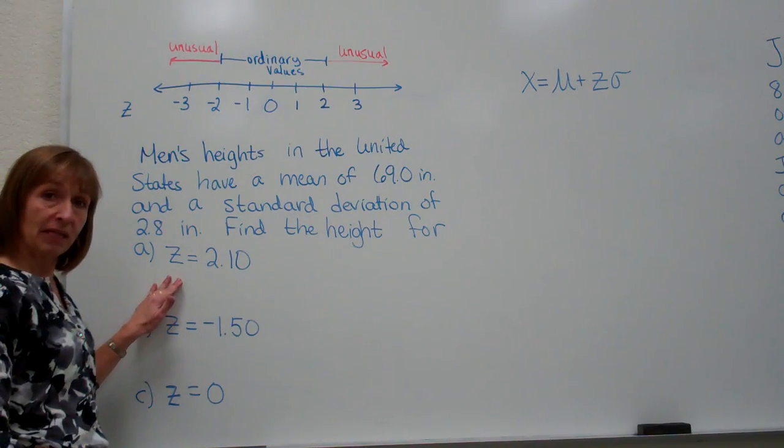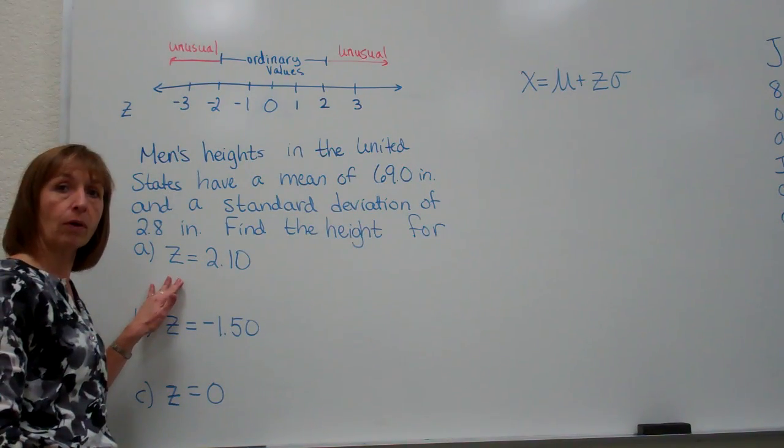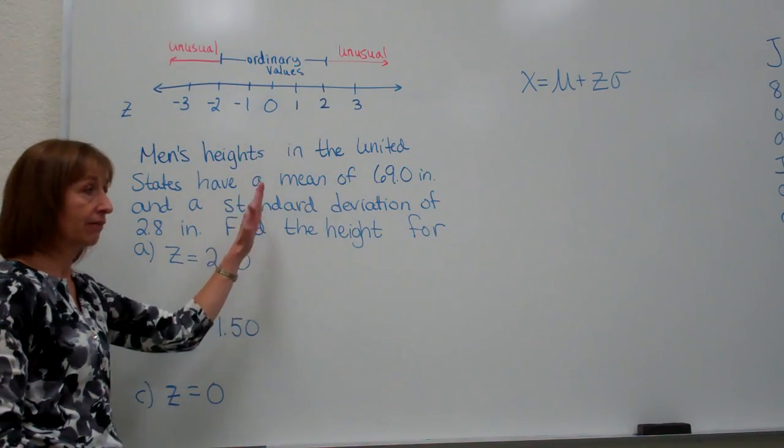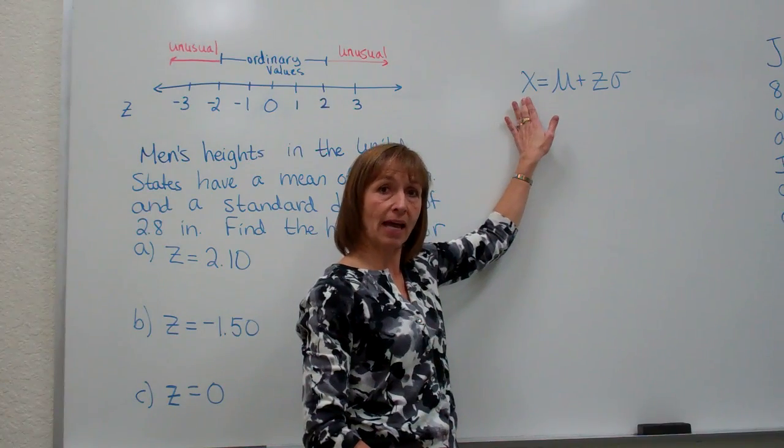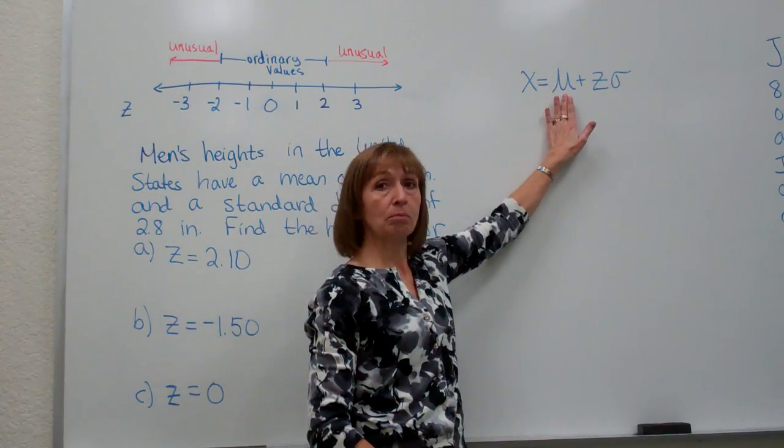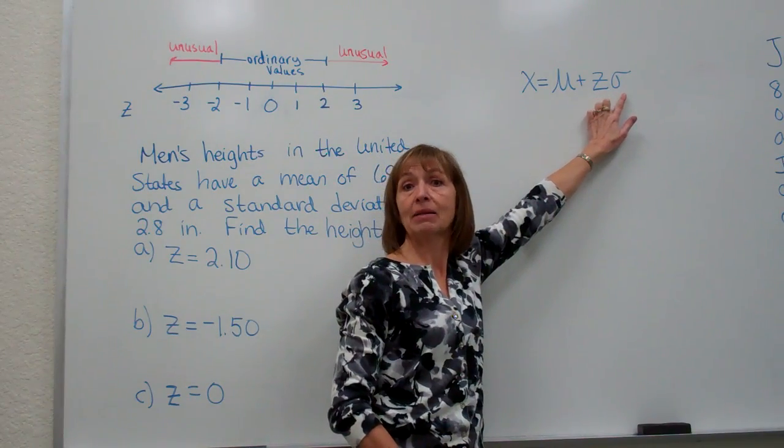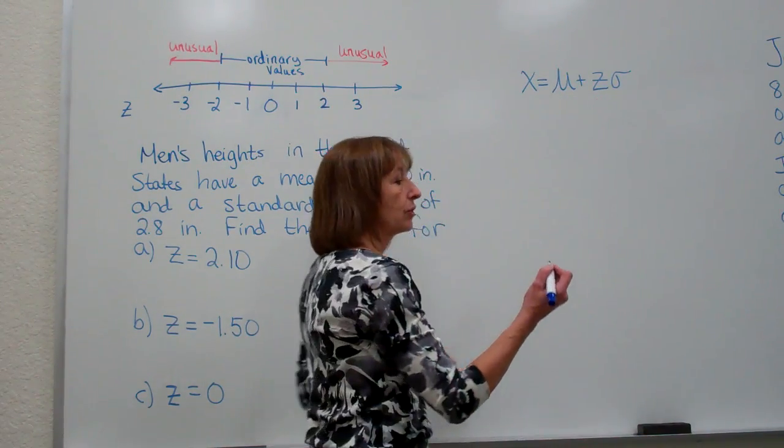So with they're giving me the z-score and they want me to find the raw score or the specific value for that particular setting that they give you, the formula that you're going to use is that your data value x is equal to the mean of your data set plus your z-score times the standard deviation and that gives you your raw score back.